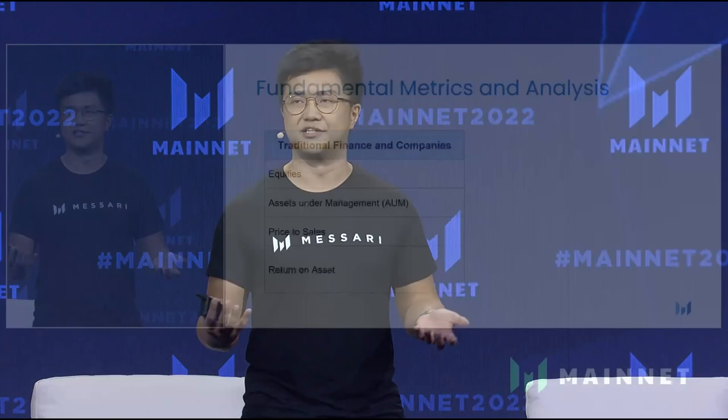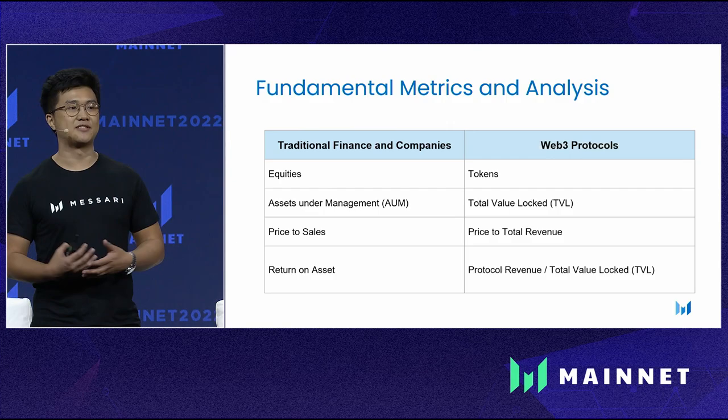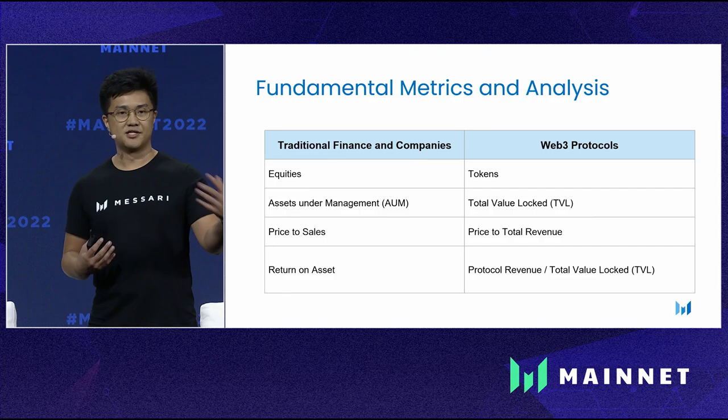Within traditional finance, when you do fundamental analysis, you would look at things like assets under management, price to sales, and return on assets. Although you can't look at these exact metrics in the Web3 and crypto space, you can draw parallels and use the same approach with fundamental metrics to determine if something is undervalued, overvalued, or a good investment opportunity. In Web3, assets under management becomes total value locked, and price to sales becomes price to total revenue.